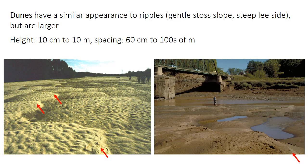The other really common type of bedform is called a dune. Dunes look kind of like giant ripples — they have a gentle upstream stoss slope and a steep downstream lee side. But the height of dunes is typically tens of centimeters, and can reach meters in height if the flow is quite deep. Their spacing is on the order of a few meters, and can be tens or even hundreds of meters. Like ripples, dunes migrate in the downstream direction because there is erosion on the stoss side and deposition on the lee face. In these photos, the lee faces of the big dunes are marked, and in the left-hand picture, the dunes have ripples superimposed on their surfaces.